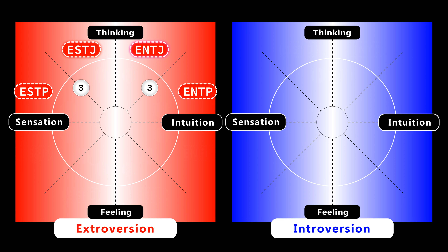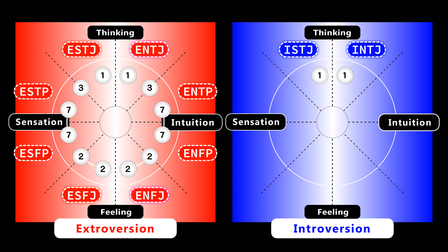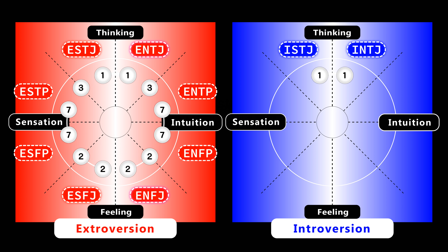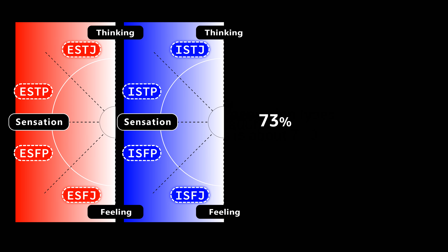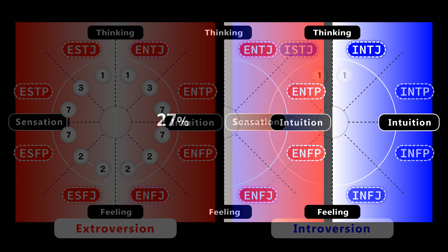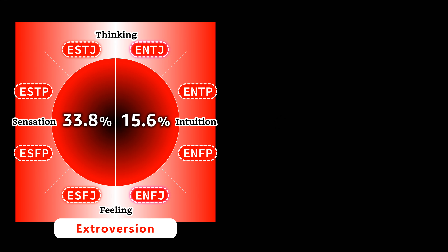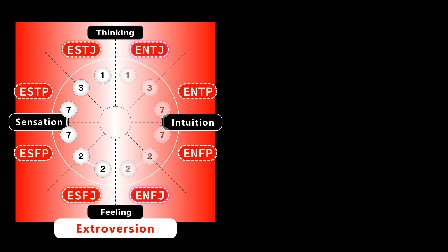As discussed previously, Type 1 tends to be ESTJ or ISTJ, but can also be ENTJ or INTJ. Type 1, Type 3, Type 7, and Type 2 are not only sensation types — they can also be intuitive types. However, the ratio between sensation types and intuitive types is about 7 to 3: sensation types are 73% and intuitive types are 27%. The percentage of ES type is 33.8% and that of EN type is 15.6%. As we can see, there are more ES types than EN types — these types are mainly sensation types.